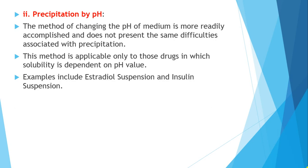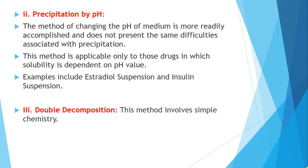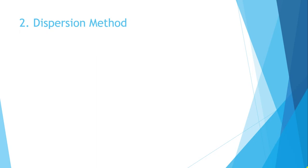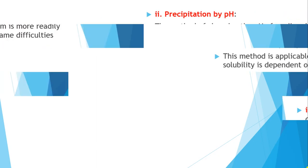The third precipitation method is double decomposition, which involves physical factors. An example is white lotion as per the National Formulary, which forms zinc polysulfide by mixing zinc sulfate and sulfurated potash solution. Simple chemistry is involved in this method. The next method is the dispersion method, which we will study in the next class.